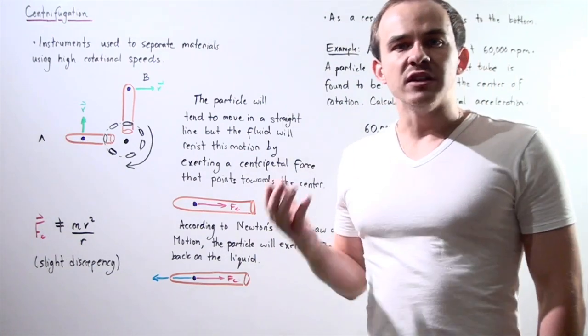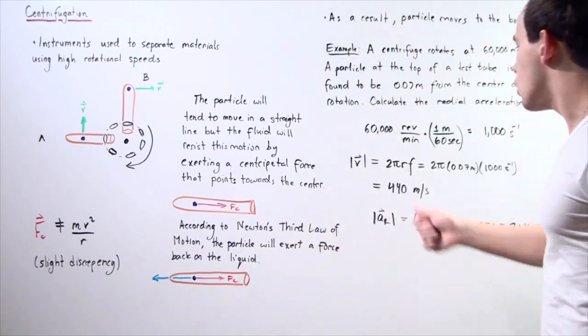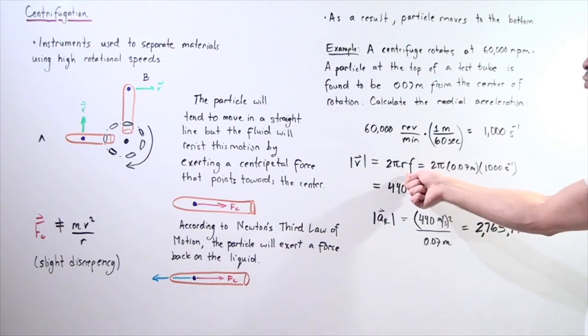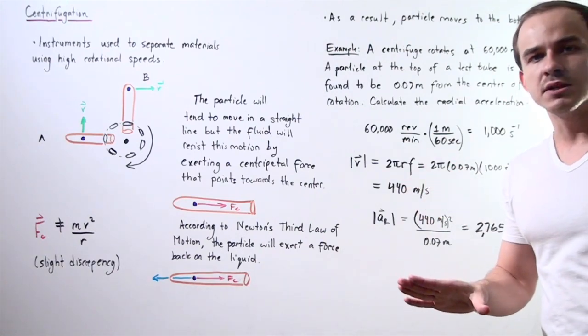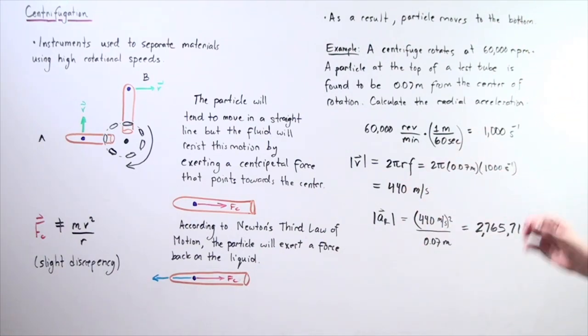We use the formula for velocity to find velocity. So 2 times pi times our radius, this distance 0.07 meters multiplied by the frequency and we get approximately 440 meters per second.